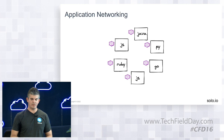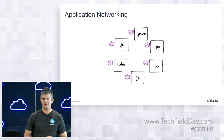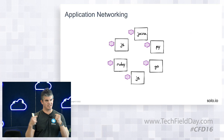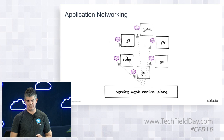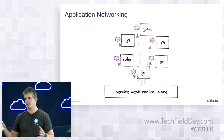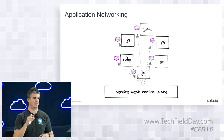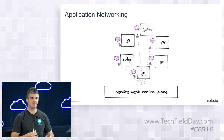We do this by deploying a little process or proxy that implements these networking behaviors alongside the application. If you're familiar with service mesh, this is the mesh part — services are communicating with each other by first talking through this little proxy that implements the networking behavior. The proxy then sends the traffic out over the network. And if you have a lot of these proxies, you need some way to configure them from a centralized location — we need an API to dynamically configure these proxies.